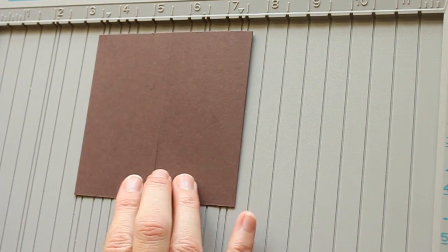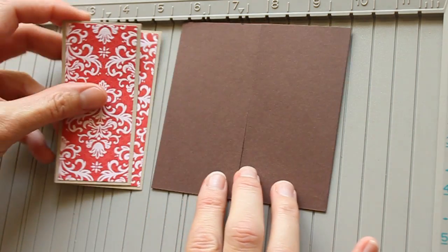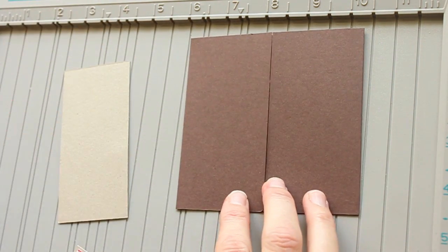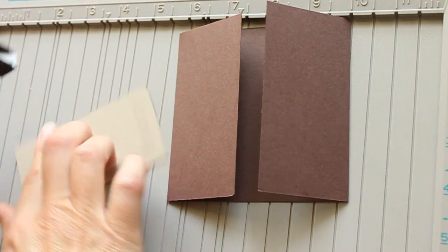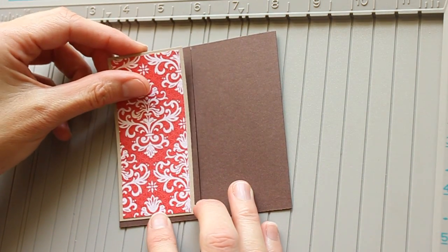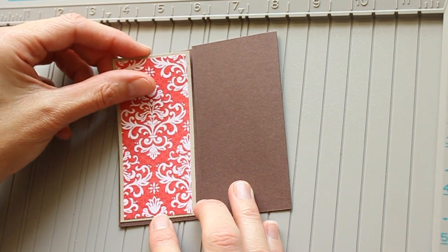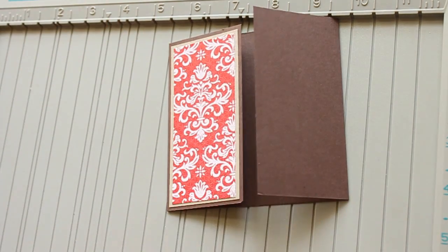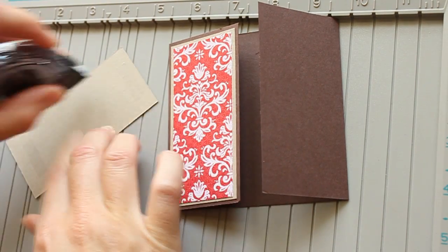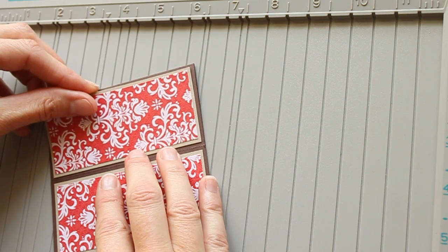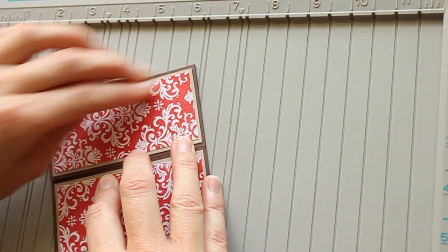This will be your card base, and it's time to decorate. I already prepared some panels. With the square card, each side measures two and an eighth by four and a quarter. So I cut my cardstock a quarter inch smaller, and then my designer paper a quarter inch smaller than the cardstock. That will be my front panels.